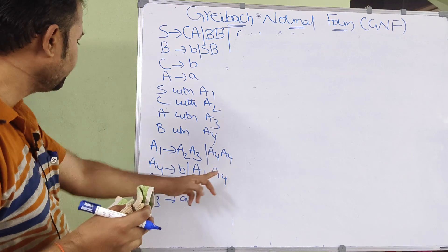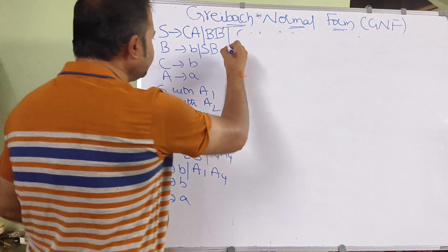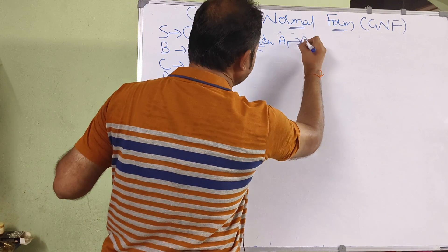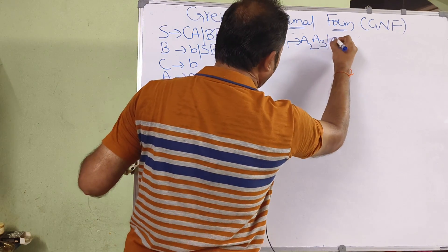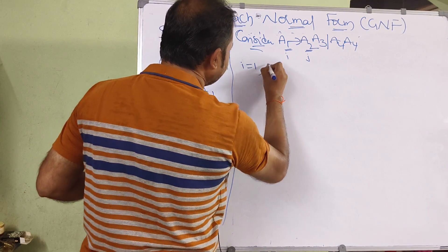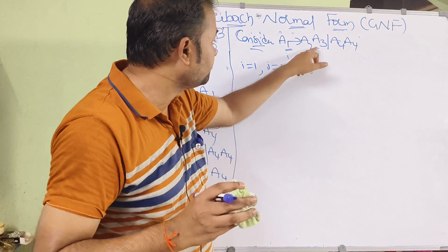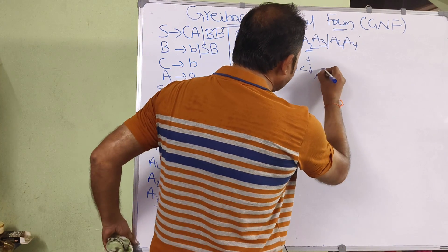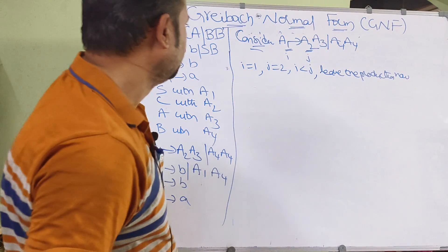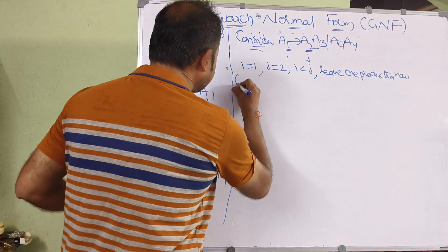Now consider the first production: A1 → A2·A3. Here i = 1, j = 2, so i < j. When i < j, leave the production for now — there is no need for substitution right now. We substitute after obtaining the A2 value. For A4 → A1·A4, here i = 4, j = 1, so i > j. When i > j, we must do the substitution immediately.